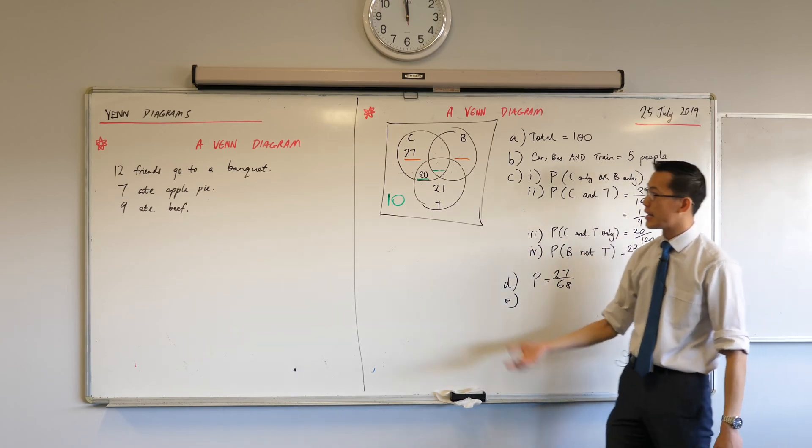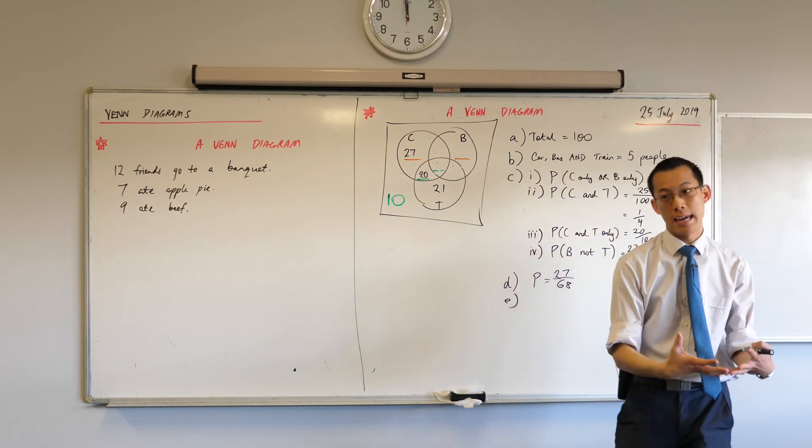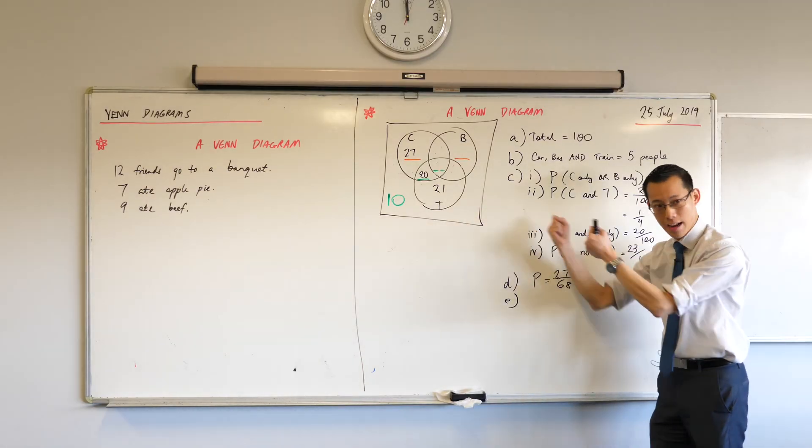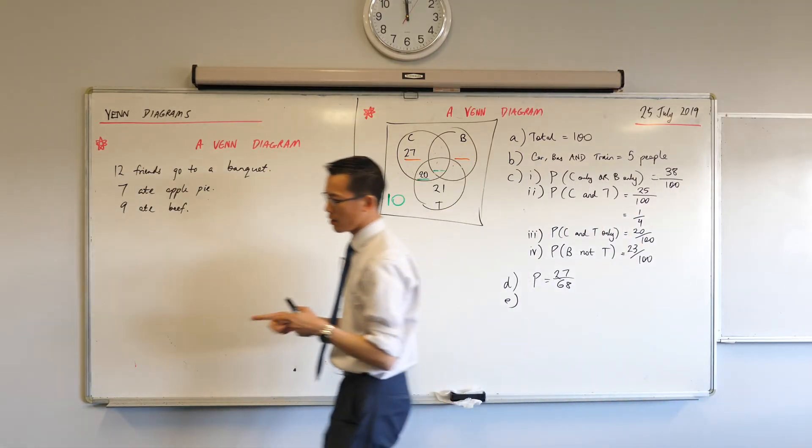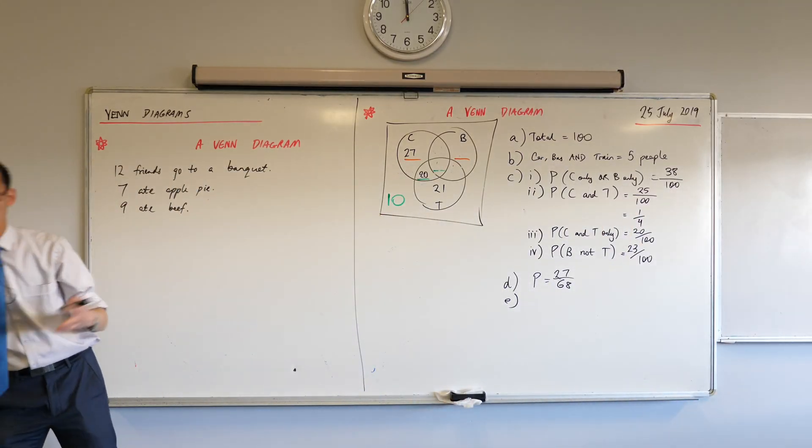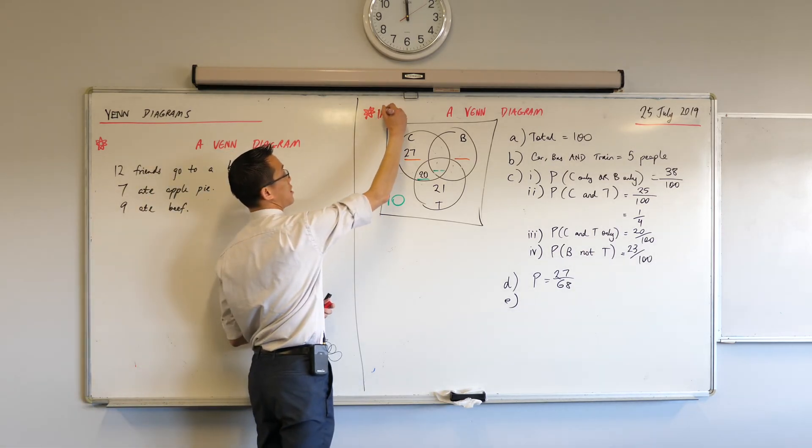What we've been doing so far is taking a Venn diagram that's already been made and then trying to extract meaning out of it. If you take something and you're trying to understand what it means, we have a word for that. It's called interpretation.